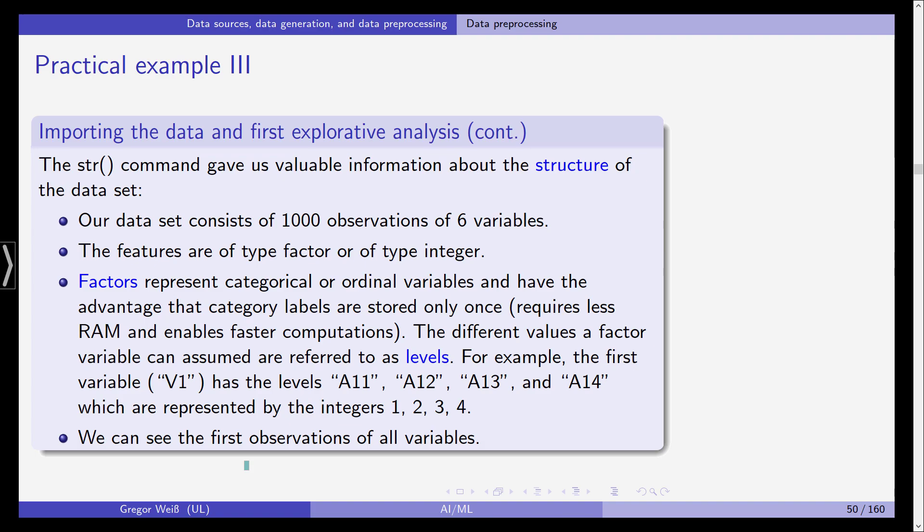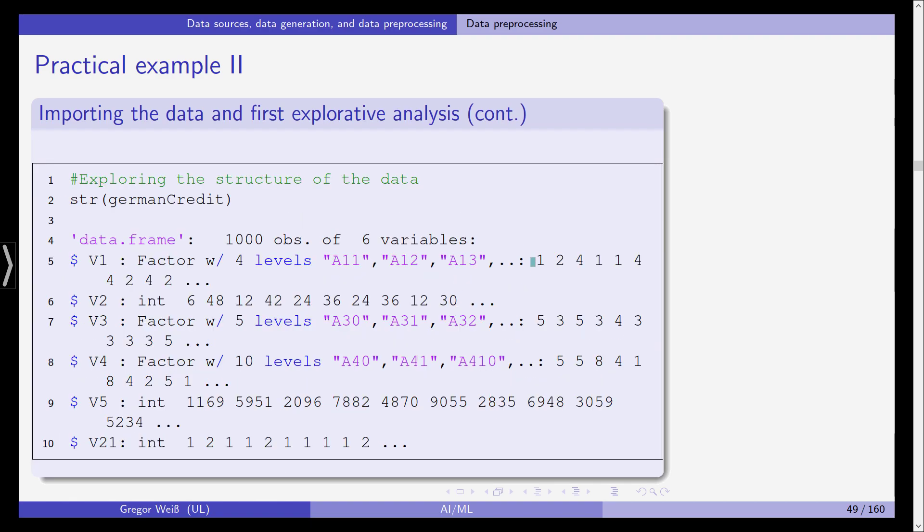The str command gives us valuable information at the very start of our analysis. We see it's a data frame with 1000 observations and six variables by construction. Features are of type factor and type integer. The factors represent categorical or ordinal variables and have the advantage that category labels are stored only once. This requires less memory and enables faster computations. The different values for factors are referred to as levels.